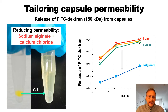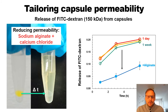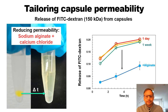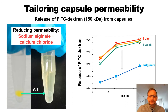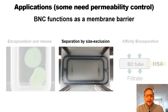The permeability of the capsules can be adjusted. If we add alginate — a very important biopolymer — the release of the material inside the capsule, in this case dextran that is dyed, can be significantly reduced. So permeability can quite nicely be controlled by adding other components during biofilm formation.